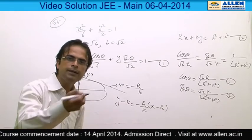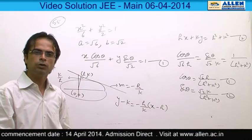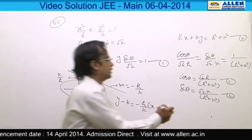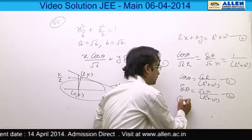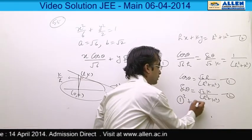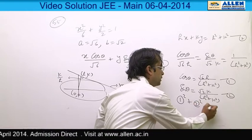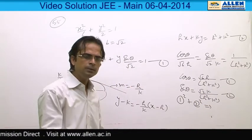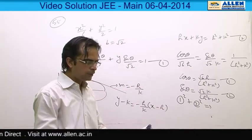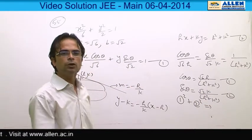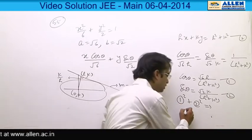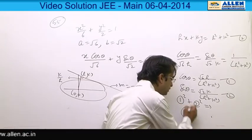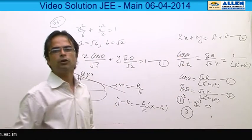Now square and add both equations to eliminate the variable θ. By simplification, we can see that option 3 is the correct option.